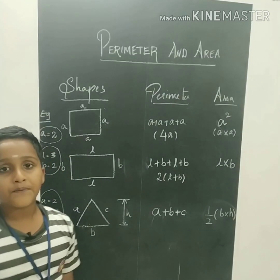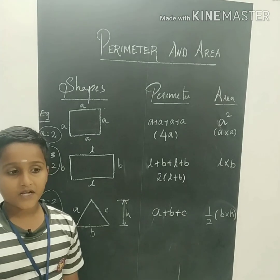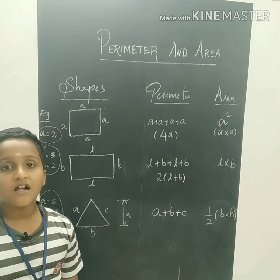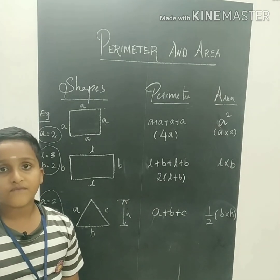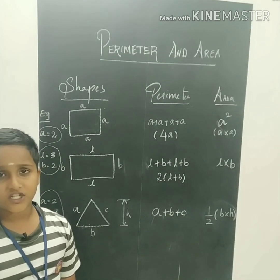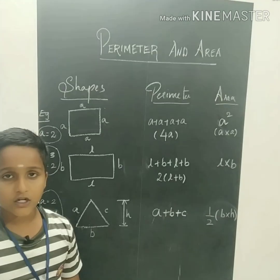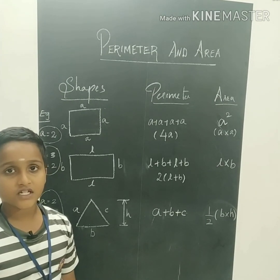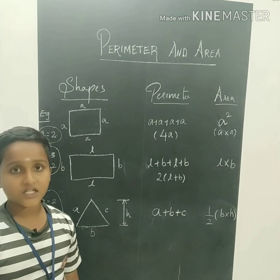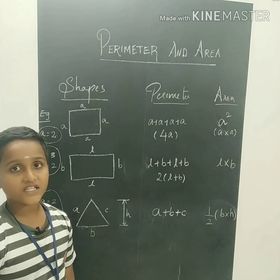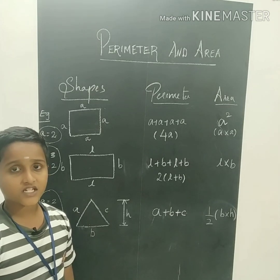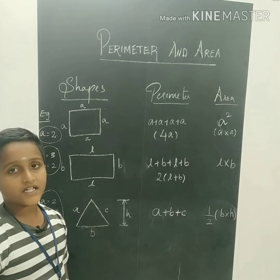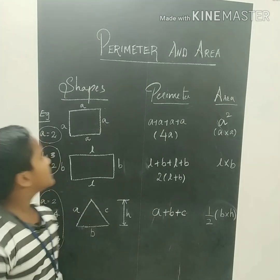There is no perimeter when we are going to round the ground in PT. We are going to round the outer surface. The outer surface is the perimeter. The inner surface is the area.